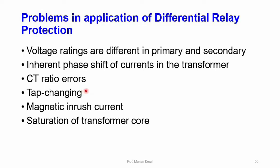In tap changing, power transformers are always provided with tap changers to regulate output voltage as required by loading conditions. The CT ratios used for differential protection on both sides are selected based on the normal tap. Once the tap is changed, the pilot wire currents on both sides will not be the same, causing spill currents to flow through the operating coil. A strongly biased differential relay can avoid such unwanted tripping.